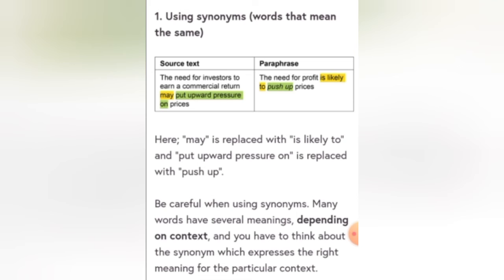Be careful while using synonyms. Many words have several meanings depending on context, and you have to think about which synonym expresses the right meaning for the particular text. For example, 'beautiful' can be replaced with 'adorable,' 'attractive,' or 'mesmerizing,' but you must choose the one that fits the context. Keep your context in mind when selecting synonyms.